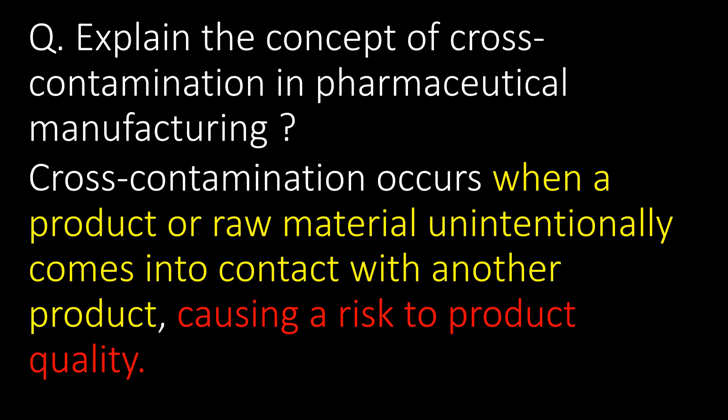Explain the concept of cross-contamination in pharmaceutical manufacturing. Cross-contamination occurs when a product or raw material unintentionally comes into contact with another product, causing a risk to product quality.